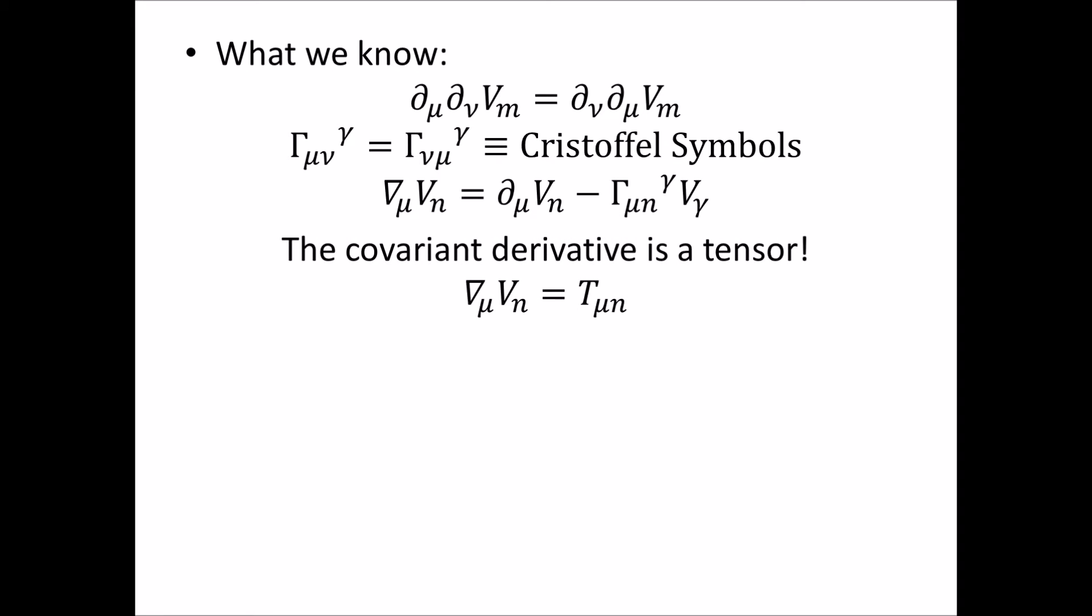And the covariant derivative is itself a tensor. It is a tensor equation, so you can think of the covariant derivative with a mu index acting on a vector, a single covariant index vector. You can think of that as a tensor, a rank two tensor, a second rank tensor, of TμN.